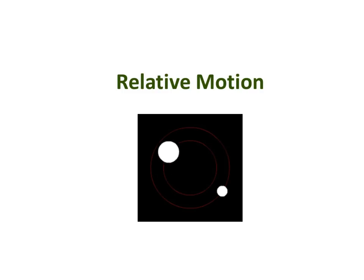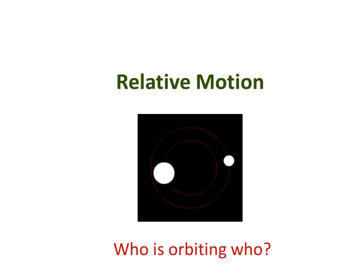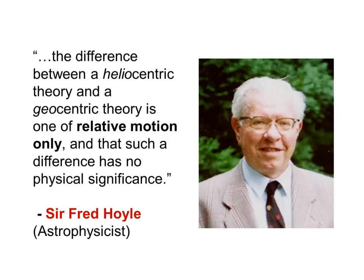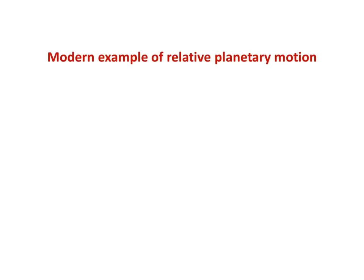But let's first of all try to understand this more by looking at relative motion. Here are two bodies, one much larger than the other, but the large one is also moving, so who's orbiting who? Surely that's a point of relativity. So Fred Hoyle says, the difference between a heliocentric theory and a geocentric theory is one of relative motion only, and that such a difference has no physical significance.